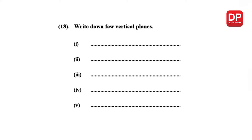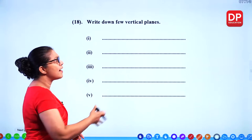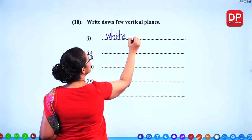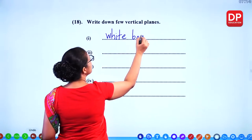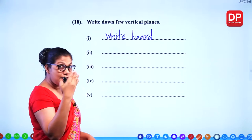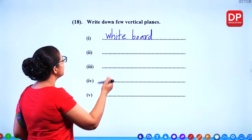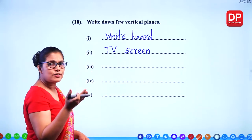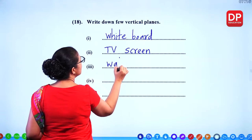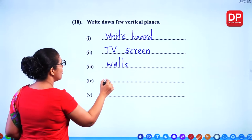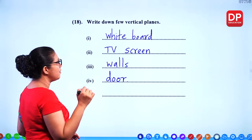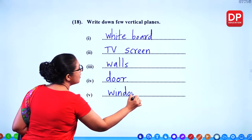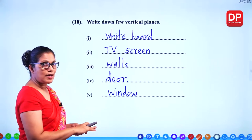Write down a few vertical planes. Looking at the board — the whiteboard is in a vertical plane. The TV screen is a vertical plane. Walls of any building are vertical. And a door and window — all these are in the vertical plane.